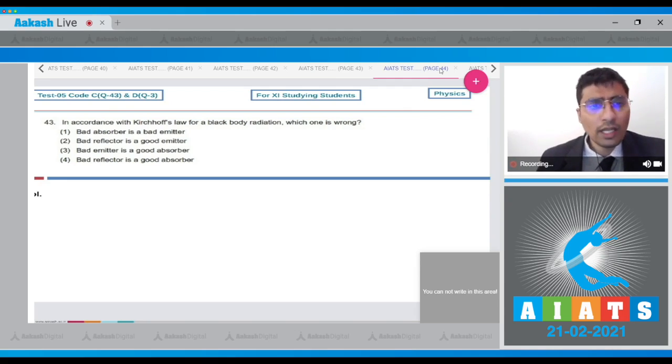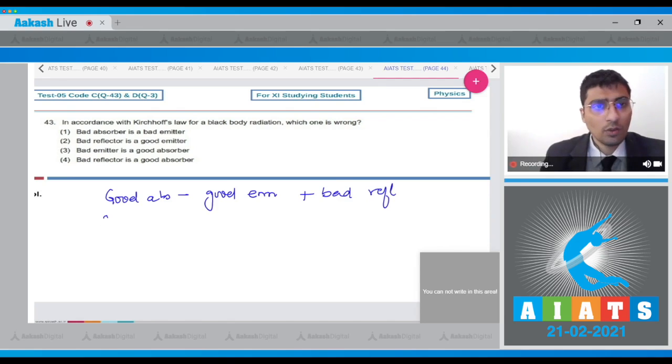Good absorbers are good emitters and bad reflectors, and bad absorbers are bad emitters and good reflectors. Please remember this. I'll repeat again: good absorbers are good emitters and bad reflectors, while bad absorbers are bad emitters plus good reflectors.